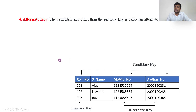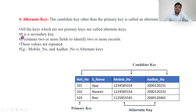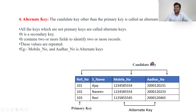Next, alternative key. Among the candidate keys, one is chosen as the primary key. The remaining candidate keys other than the primary key are called alternative keys. For example, if I take roll number as the primary key, then mobile number and Aadhar card become the alternative keys. Important points: all keys that are not the primary key are called alternative keys, also known as secondary keys. The combination of alternative keys and the primary key forms the full set of candidate keys.